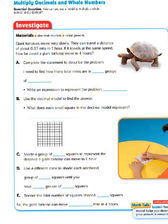Now, let's take a look at our word problem. Giant tortoises move very slowly. They can travel a distance of about 1/100th mile in one hour. If it travels at the same speed, how far could a giant tortoise move in four hours?